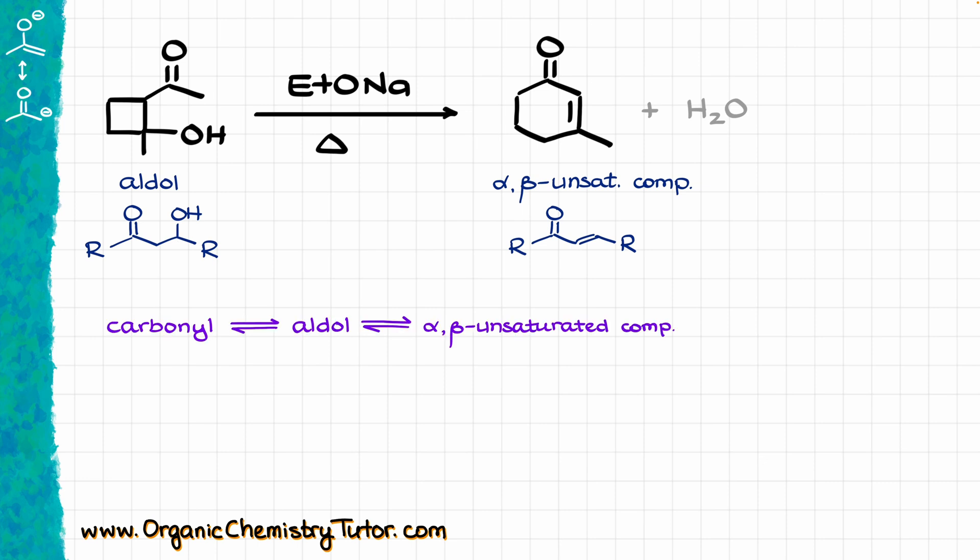However, in this case, I cannot directly go from my aldol to my alpha-beta unsaturated compound because structurally we start with a four-membered ring and we finish with a six-membered ring, which means that we are looking at the ring opening step somewhere in our mechanism, which we then are going to close back up again to make our final product.